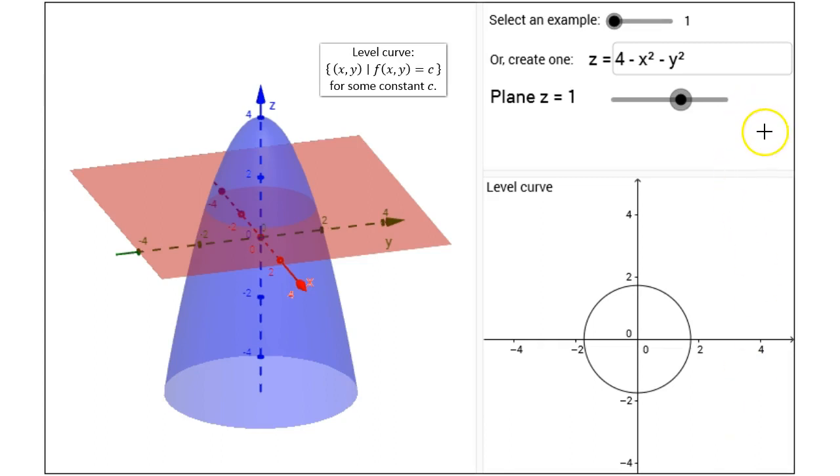So in this particular case I've set my c value equal to 1. So what's being graphed in the xy plane for my level curve is the set of all points xy such that 4 minus x squared minus y squared equals 1.